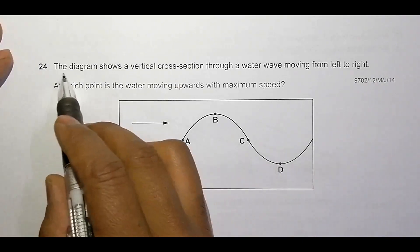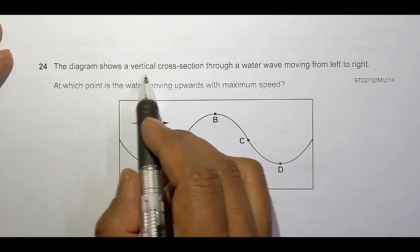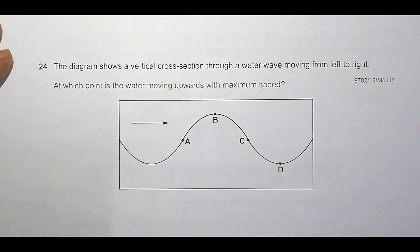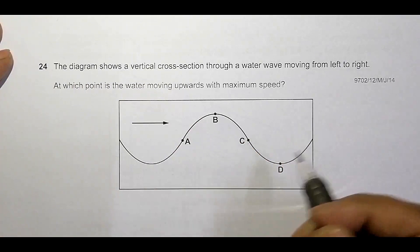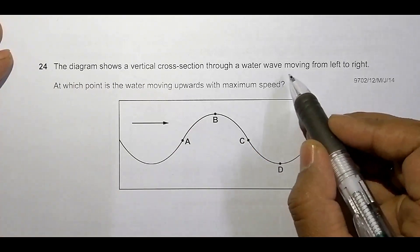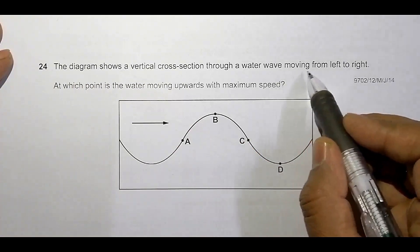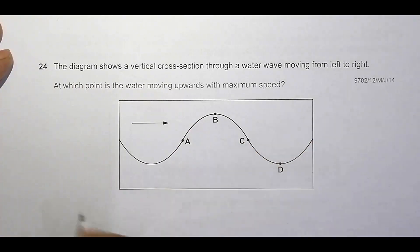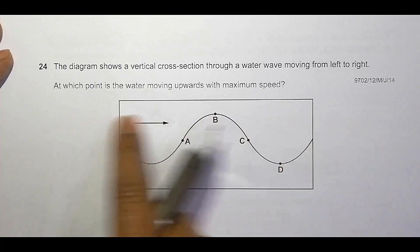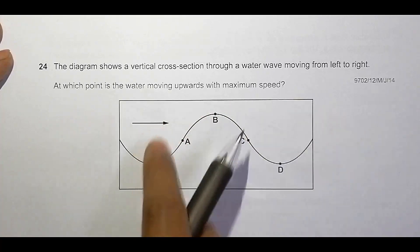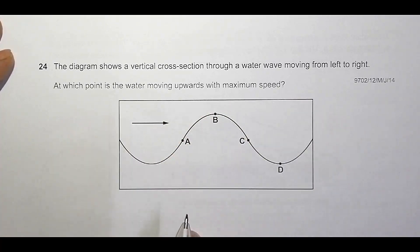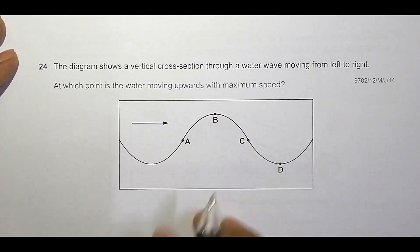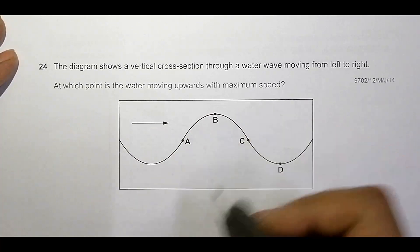It says that the diagram shows a vertical cross section through a water wave — waves passing through water — looking from the sides, moving from left to right. So water waves move from here to here, shown by this arrow. At which point is the water moving upward with maximum speed?